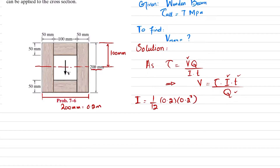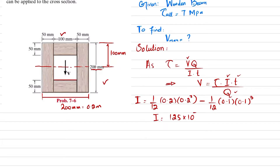Then we subtract the moment of inertia of the hollow portion: minus 1/12 times its breadth, which is 100 mm (0.1 m), times its height, which is also 0.1 m, cubed. When you solve this, you get the moment of inertia for this cross section: I = 125 × 10⁻⁶ m⁴.